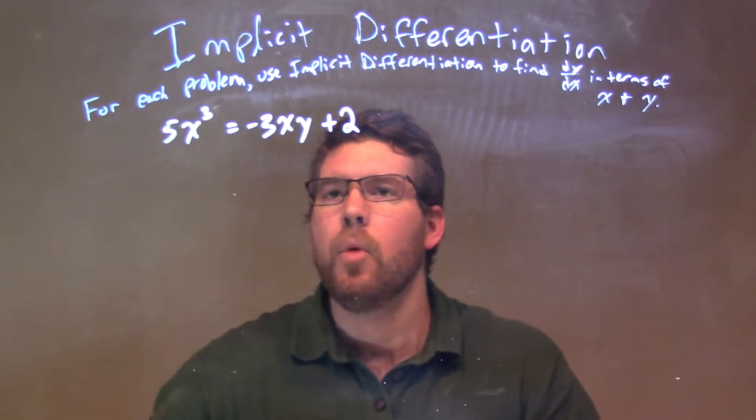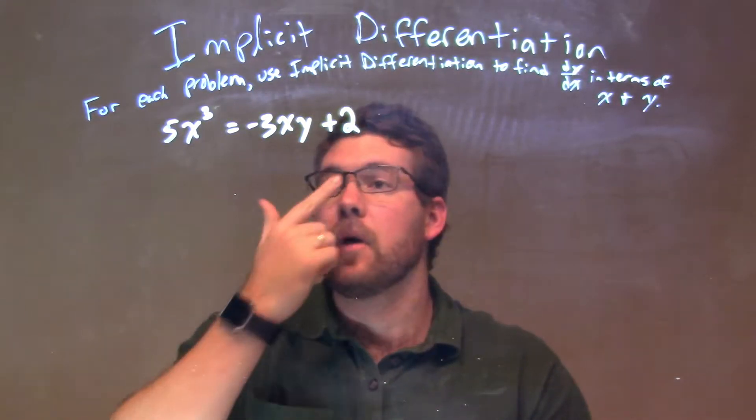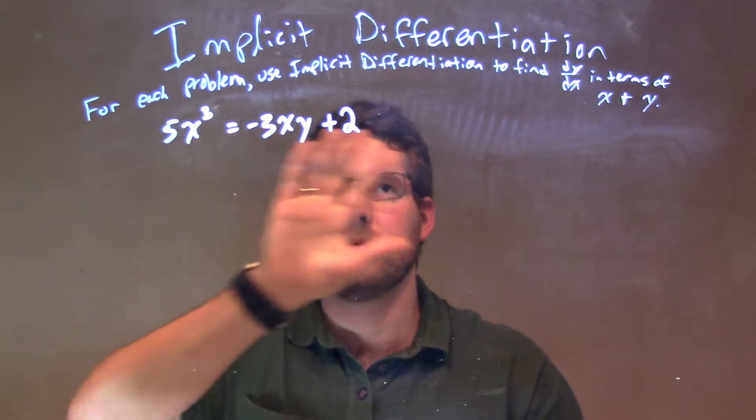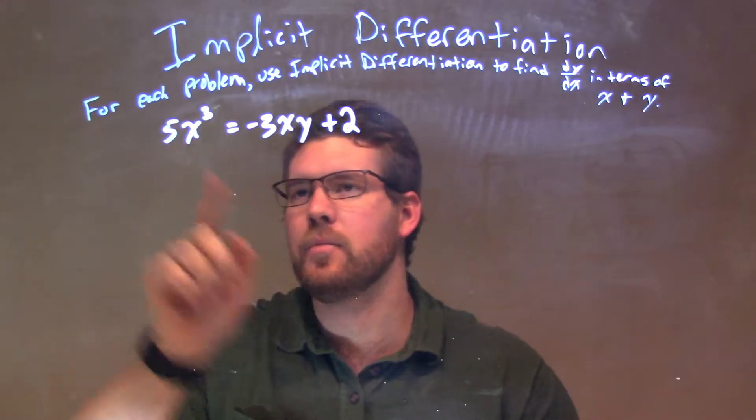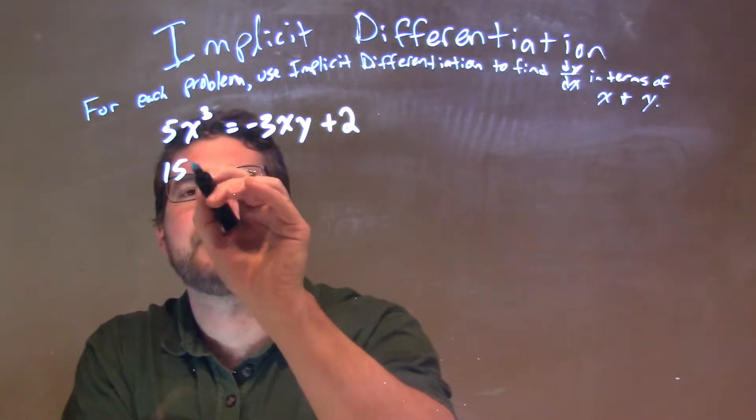Okay. Well, what I want to do here is I want to derive this using implicit differentiation. The power rule comes down, 3 times 5 is 15, x squared.